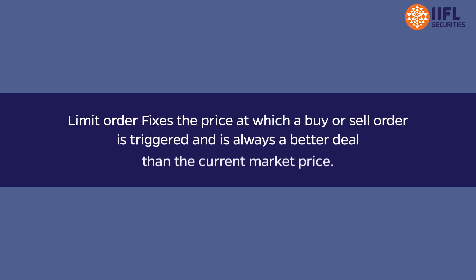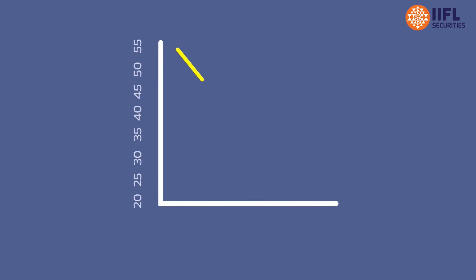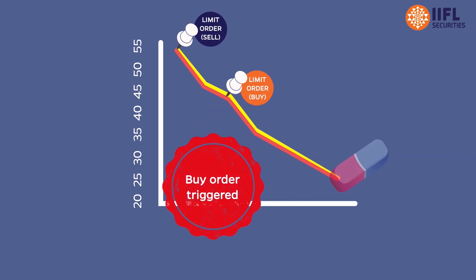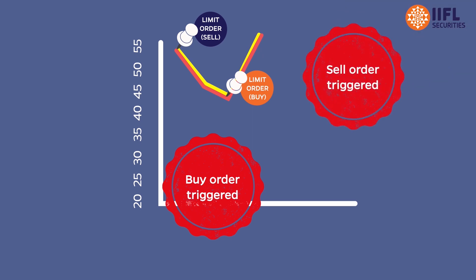Limit order fixes the price at which a buy or sell order is triggered. Agar share price rupees 50 hai aur aap rupees 45 mein khareedna chaate ho ya rupees 55 mein bechna chaate ho, you can set your limit order accordingly to trigger the transaction at aap ka chosen price.